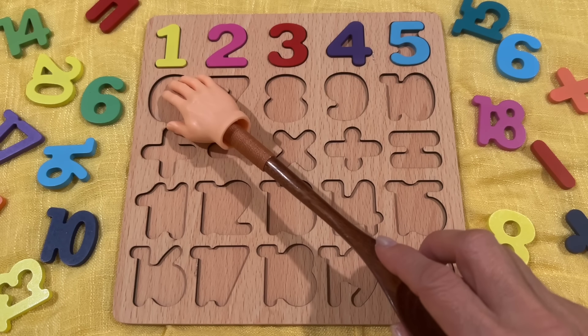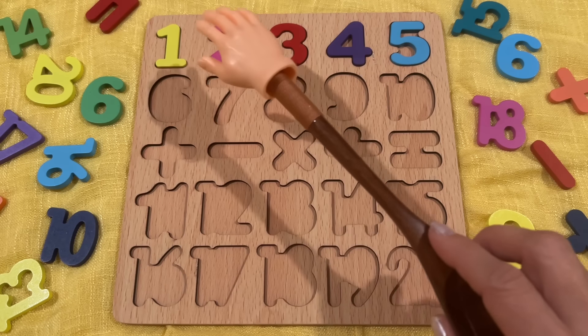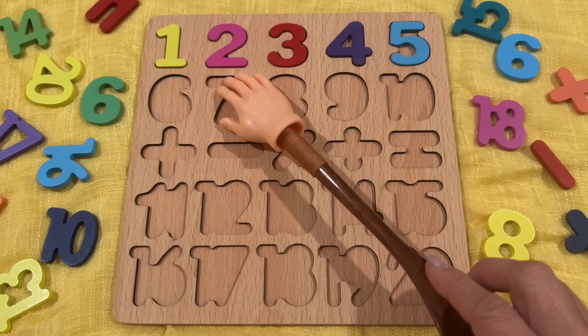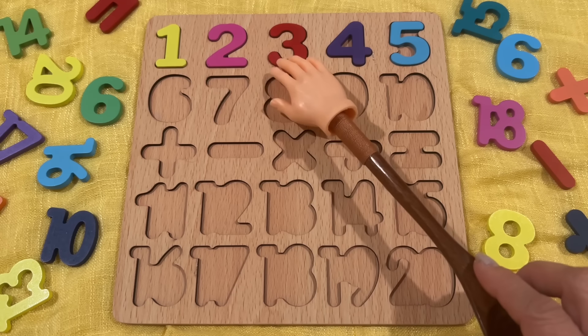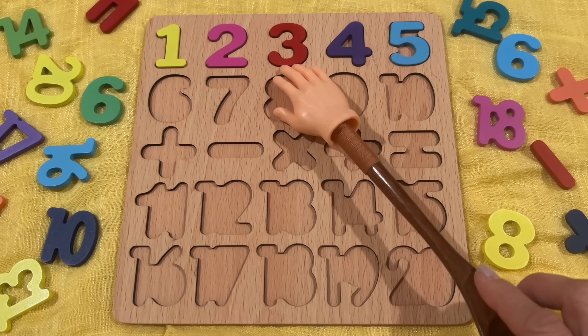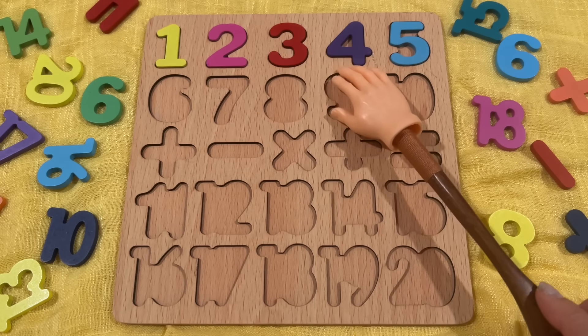One, 일. Two, 이. Three, 삼. Four, 사. Five, 오. Six.